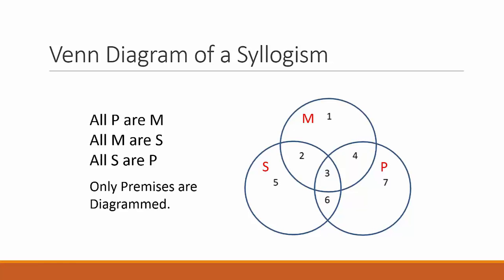Let's walk through the process of diagramming a syllogism with two premises that are A claims. The conclusion is never represented in a Venn diagram of a syllogism, since the conclusion of a valid syllogism is the result of the premises. The conclusion is what the Venn diagram should say after we diagram the premises of a valid argument. Remember that the subject and predicate terms of a syllogism are determined by the conclusion.